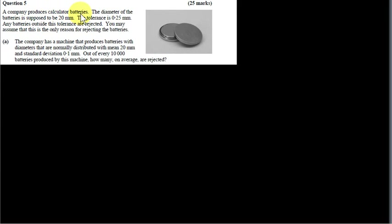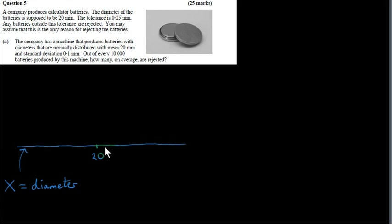A company produces calculator batteries. The diameter of the batteries is supposed to be 20 mm, and the tolerance is 0.25 mm. We can think of the range of values for the diameter of a battery lying along this line. The ideal value for the diameter is 20 mm. Any batteries outside this tolerance are rejected.